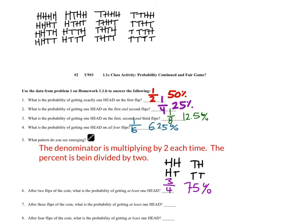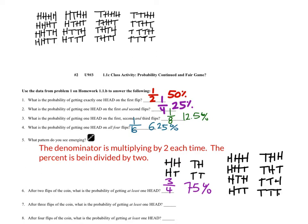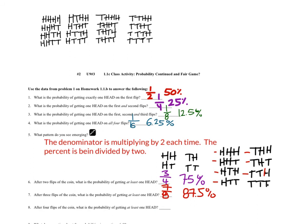After three flips, what is the probability of getting at least one head? Looking at the list, seven out of eight possible outcomes have at least one head — that's 87.5%. After four flips, only one outcome has all tails, so 15 out of 16 outcomes have at least one head, giving a 93.75% chance.